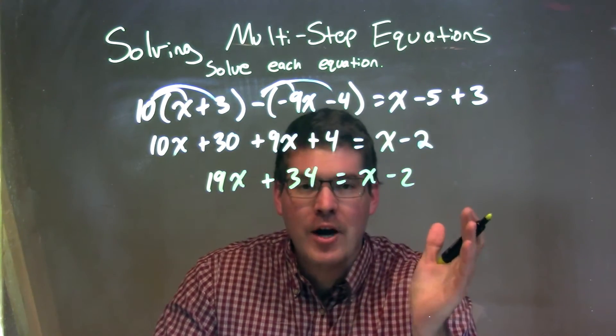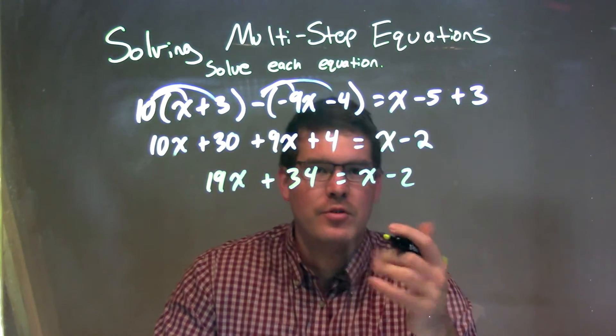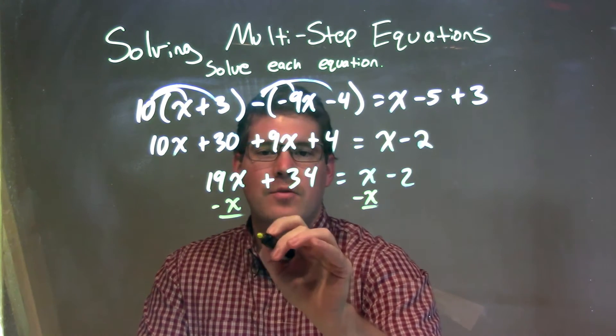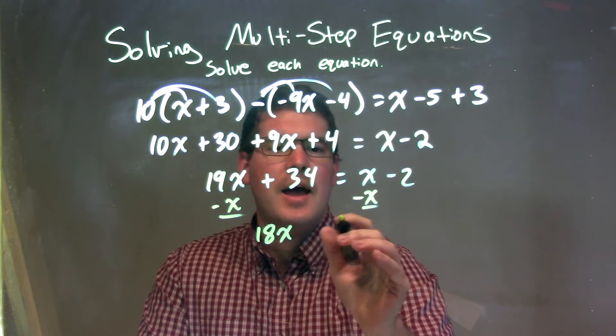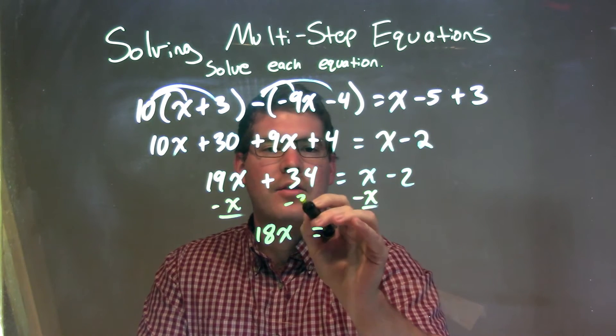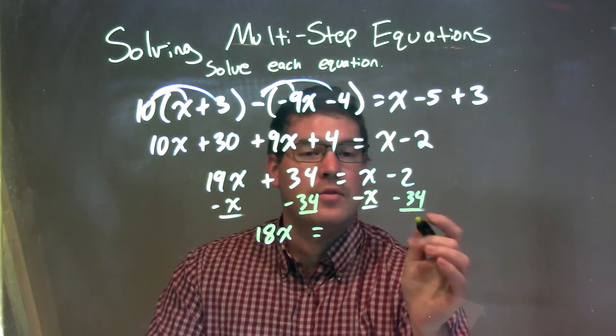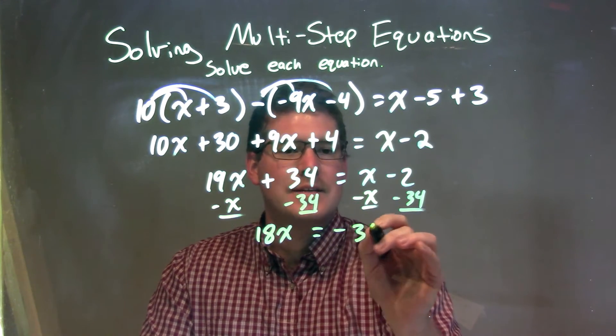Now, let's bring our variables to the left and numbers to the right. So let's subtract x from both sides, leaving us with 18x. And that equals - we subtract 34 from both sides - we're left with negative 2 minus 34, which is negative 36.